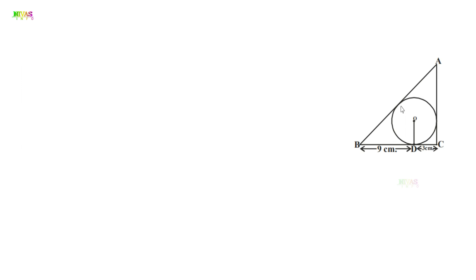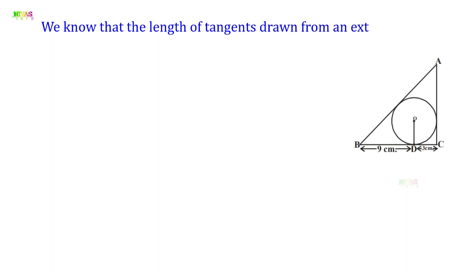The two tangents drawn from an external point to a circle are always equal in length. So if BD is a tangent from B, BF is also a tangent from B and they are the same length. C is the external point here; CD is a tangent and CE is also a tangent, so they are the same length. We know that the length of tangents drawn from an external point to a circle are equal.